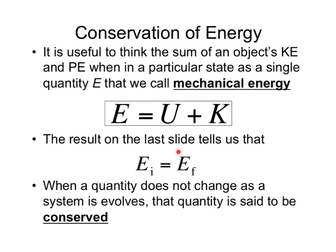I want to start on this slide to remind us that if we're dealing with conservative forces, at any point the total system energy — potential and kinetic — at any one point, say initial, is equal to the total system energy final. That is true if all energy is conserved.